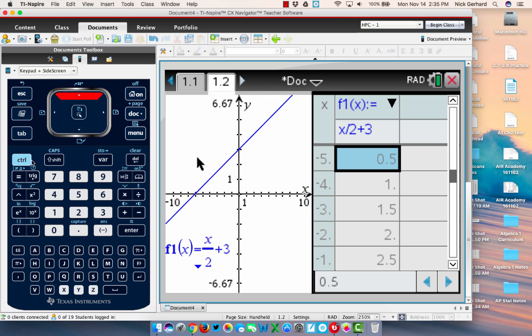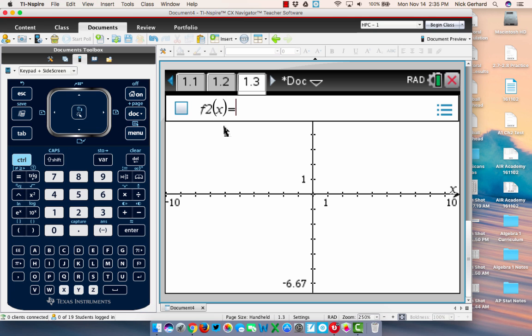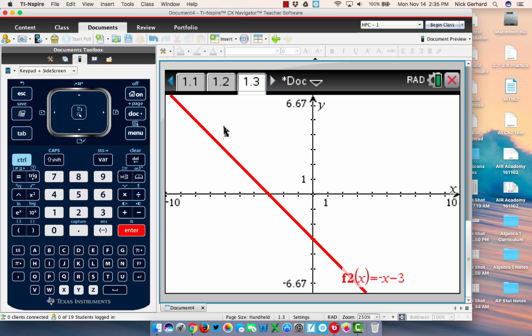If you want to do a new graph, press control, dock. Do a new graph. And then you can type in, say, negative x minus 3. Click enter. There's our graph.